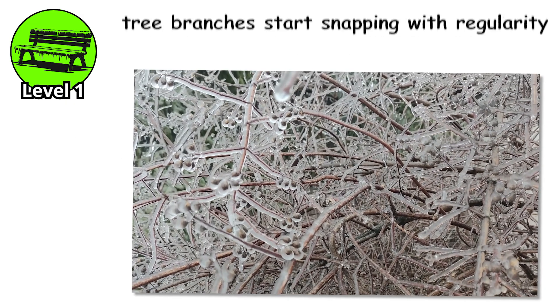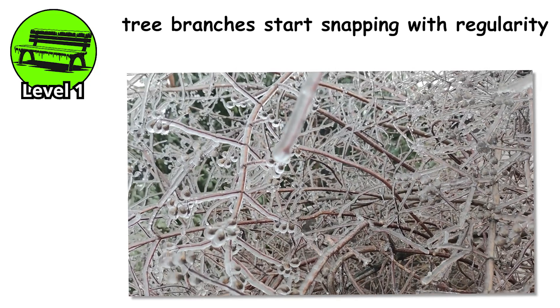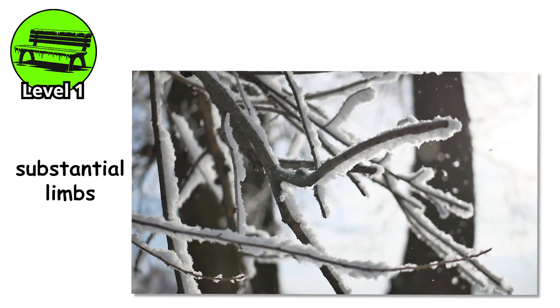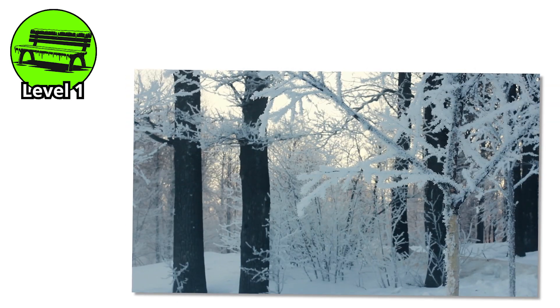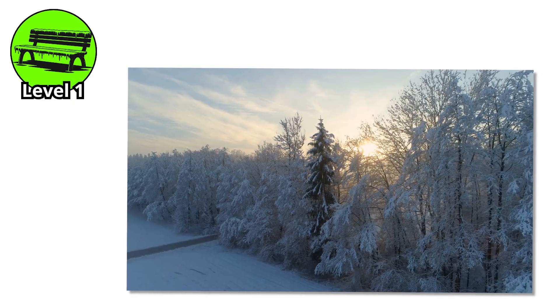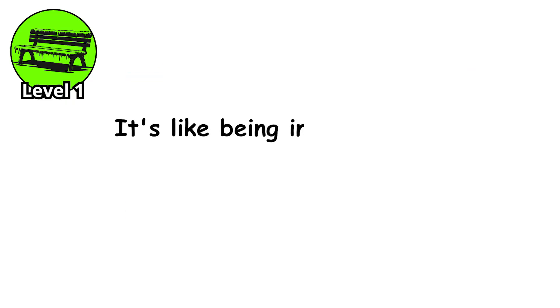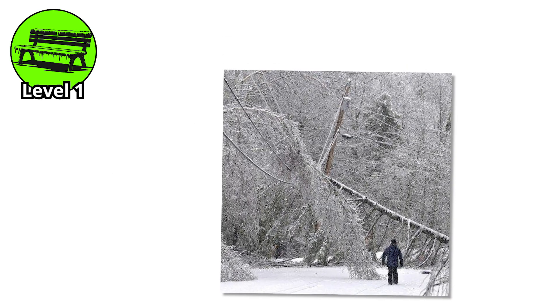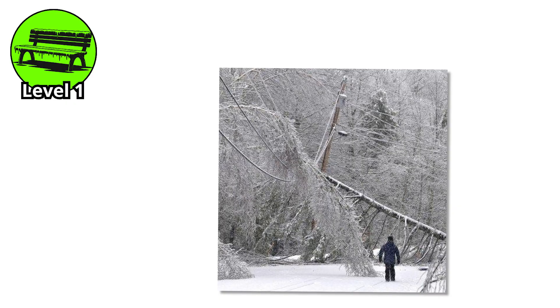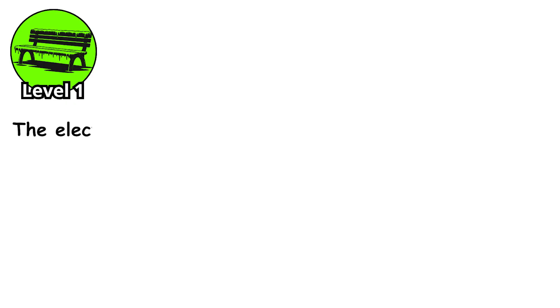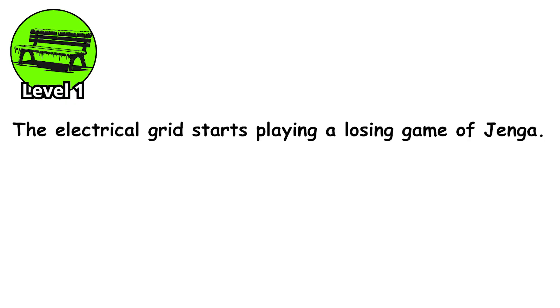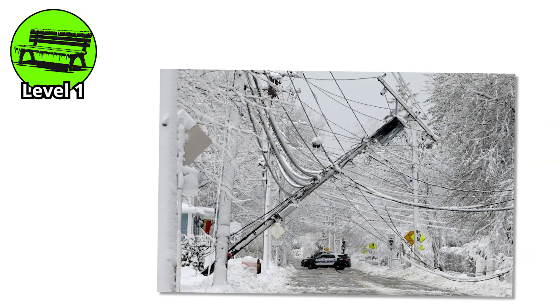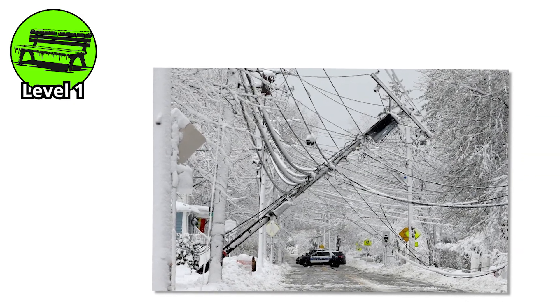At this level, tree branches start snapping with regularity — not the small twigs, but the substantial limbs, the ones as thick as your thigh. They don't bend under the weight, they just give up, fracturing with sounds like rifle shots echoing through your neighborhood. It's like being in a war zone where the bullets are made of wood and ice. Power outages begin. A falling branch takes down a power line here, accumulated ice pulls another one down there. The electrical grid starts playing a losing game of Jenga. Some neighborhoods lose power for a few hours; others won't see electricity again for days.